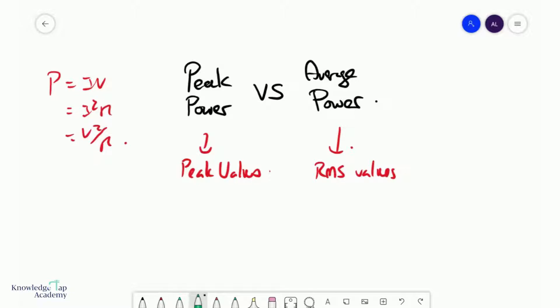If I want to calculate peak power, that would be I0V0, or I0 squared R, or V0 squared over R, where R is the resistance or the resistor where you're trying to calculate the power dissipation in.